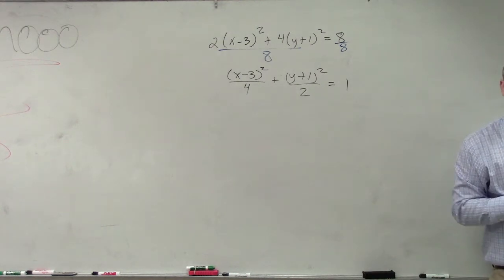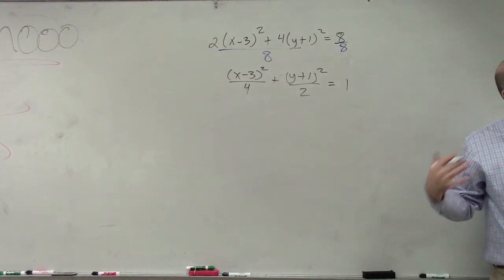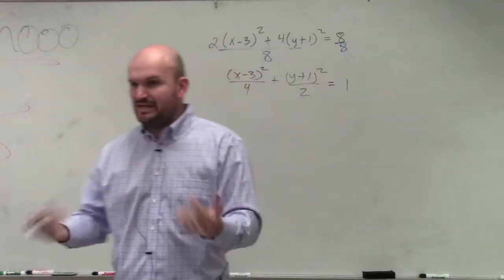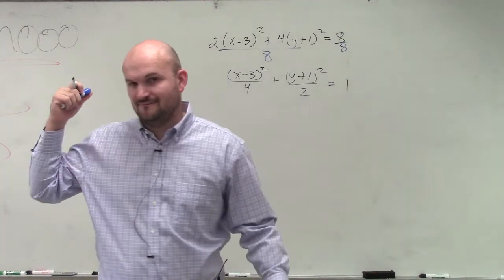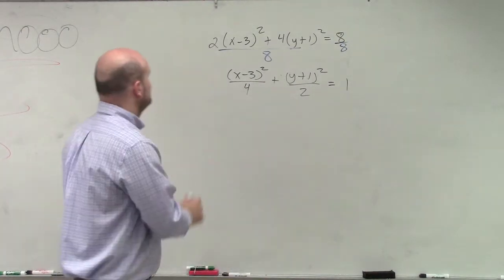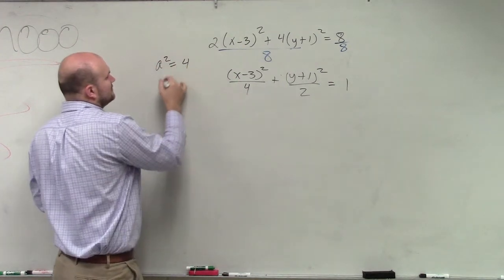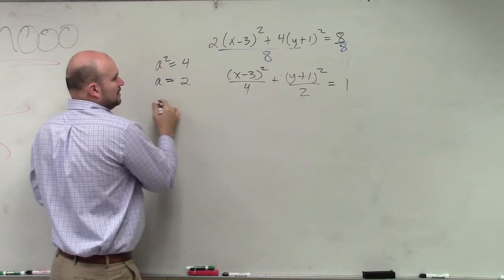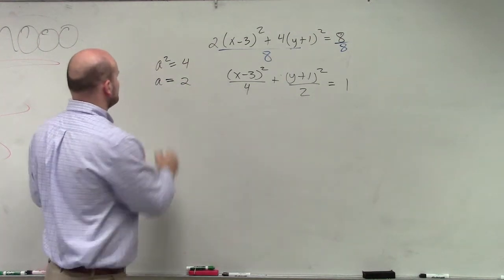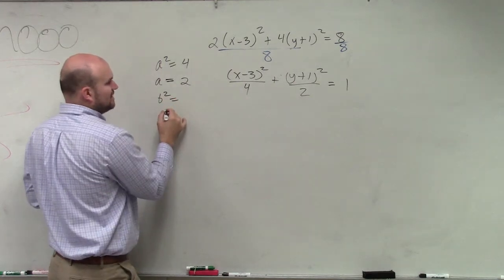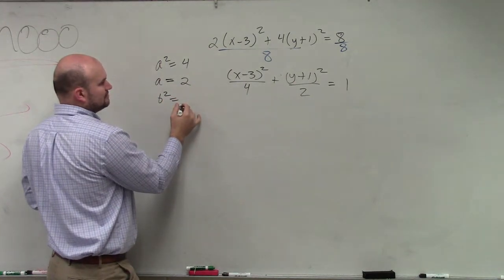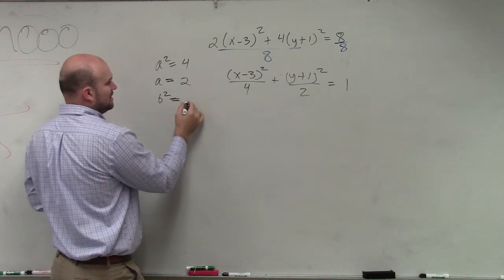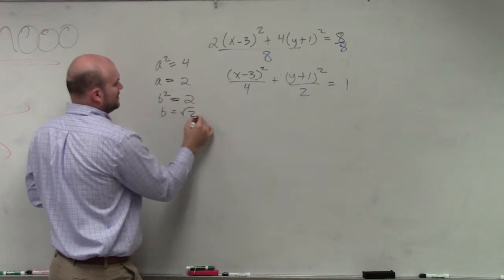So does everybody see what I did? I just did a little bit of algebra, a little bit of work, to now put it into my ellipse form that I'm comfortable with, right? Because now it's pretty easy to find my a squared. A squared is 4. A squared equals 4. So A equals going to be 2. B squared equals 2. B squared equals 2, so therefore B equals the square root of 2.